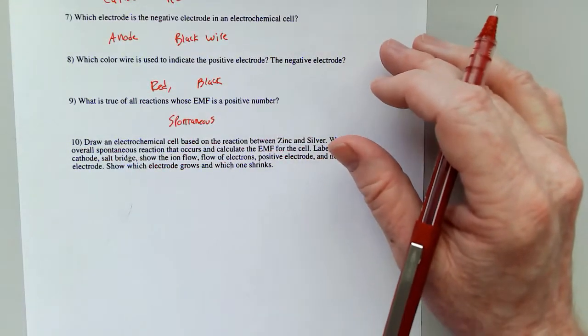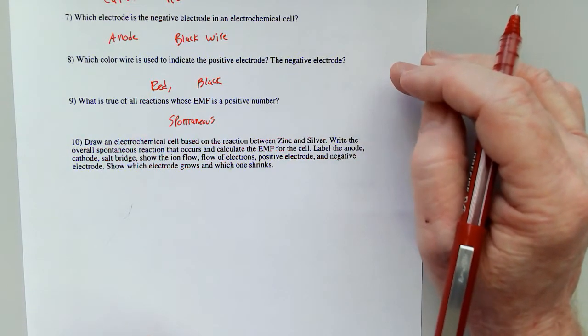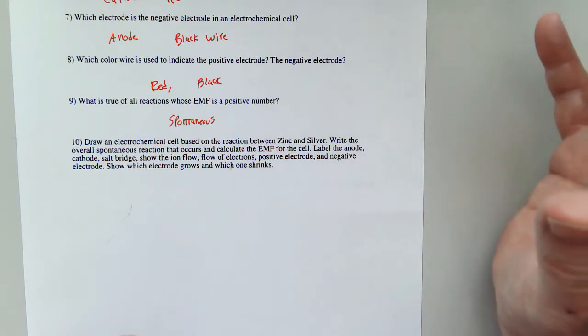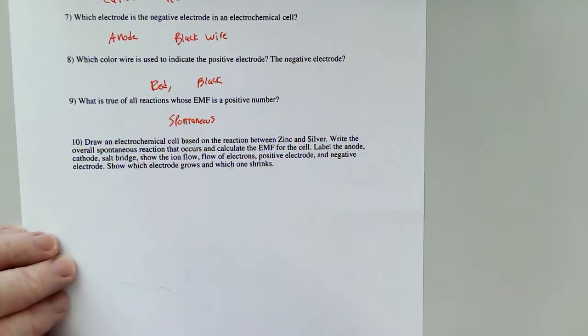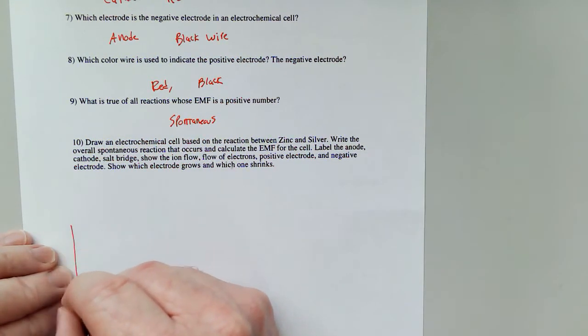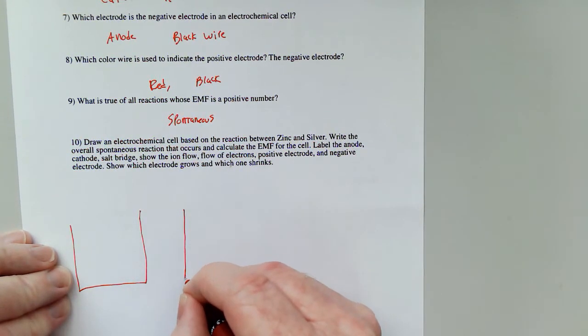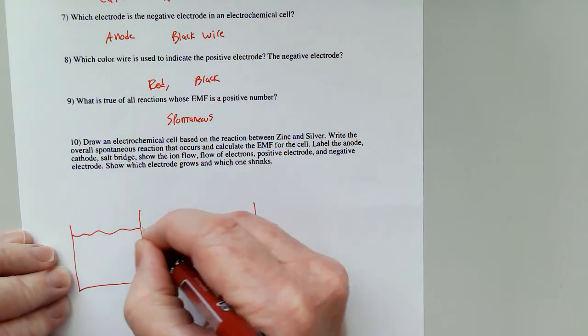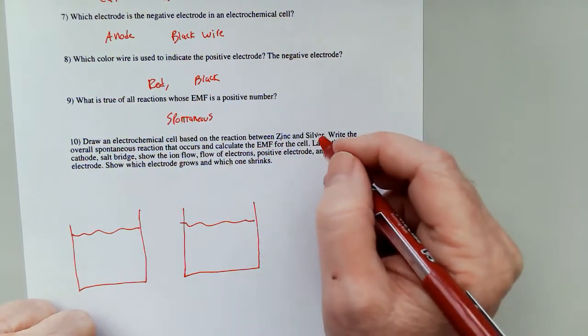So let's draw up a nice reaction here, where we see the actual movement of all the particles, what grows, what gets smaller, what gets bigger, et cetera. So we're going to start off with our two cells. They will have a solution in them and a piece of metal. Now for following here, zinc and silver.